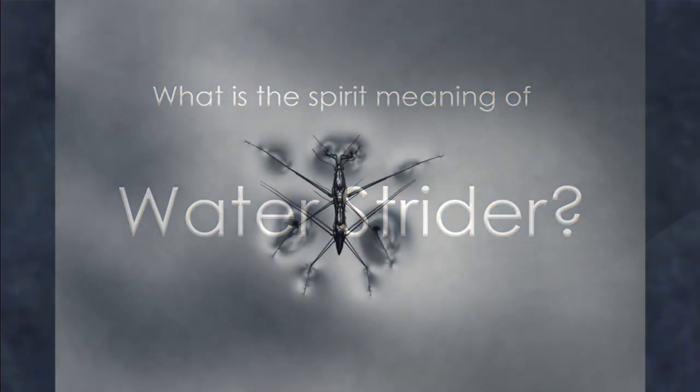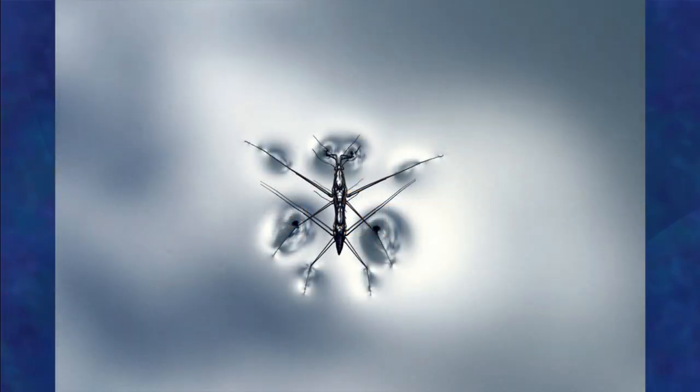You can find water striders in water across most of the world. They're not found in New Zealand, but across most of China, Europe, North America, and South America. There are even species that live in the open ocean, so they're very widespread.